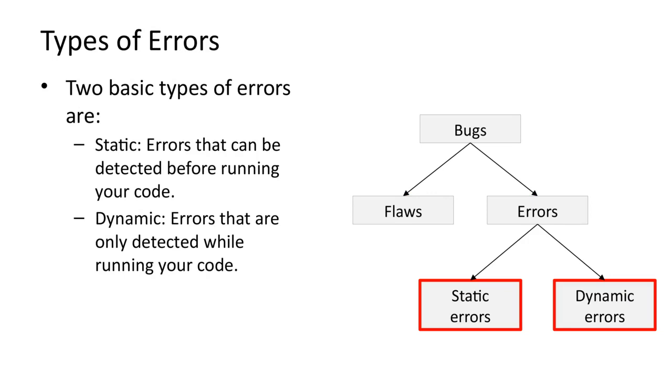Errors can be divided into two types, static and dynamic. Static errors can be detected before running your code. A common type of static error is a syntax error, such as a missing bracket.